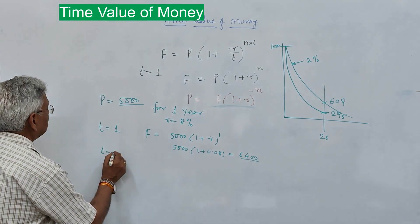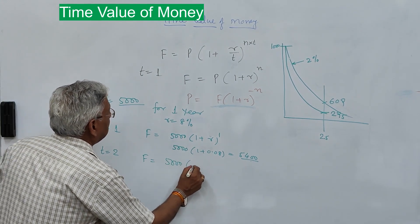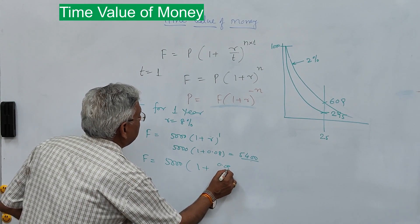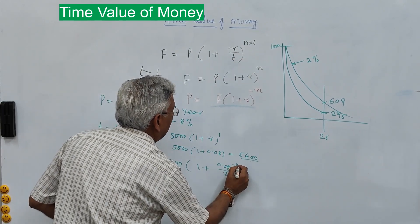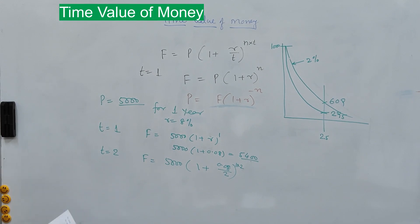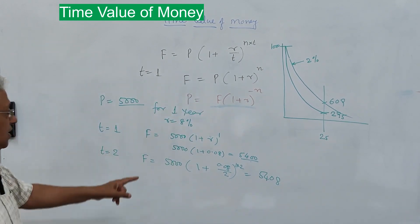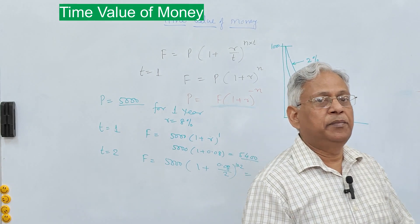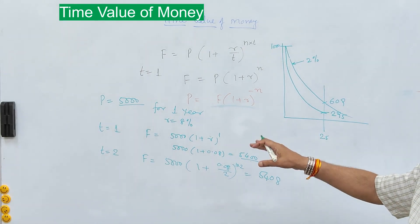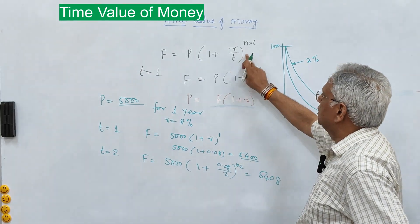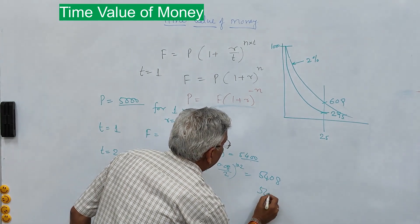If it is paid 6 monthly, then T becomes 2. In that case F will be 5000(1 + 0.08/2)^2, which equals 5408. That is the increment you get of 8 rupees if the bank pays 6 monthly. And if it pays daily, if this interest is paid on daily basis, then T is 365, and this amount will be something like 5440. That is how the amount increases.